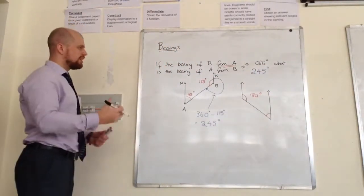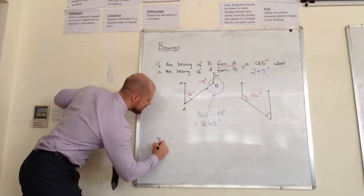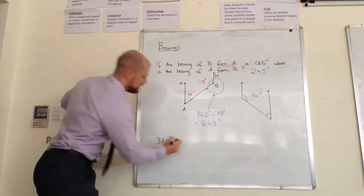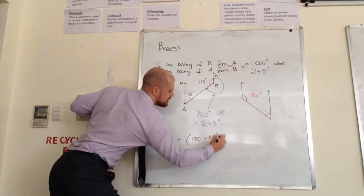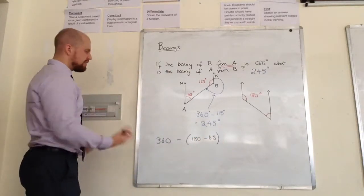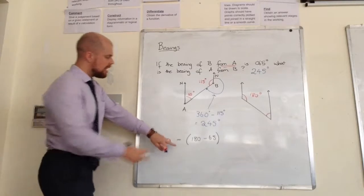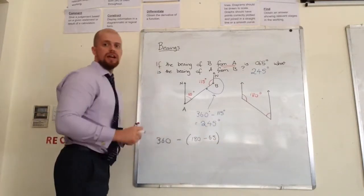To put it in one full sentence, the bearing is 360 take away 180 minus 65. So if you wanted to, you could do 360 minus 180 plus 65 on the end.